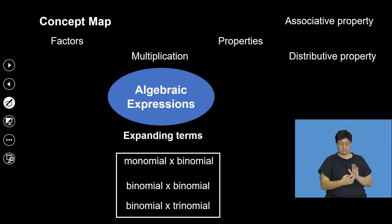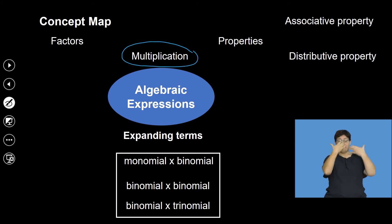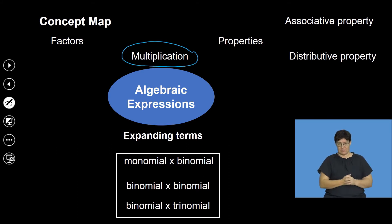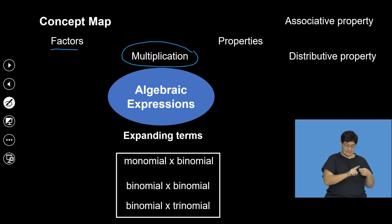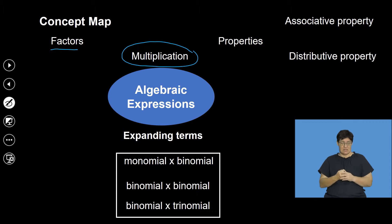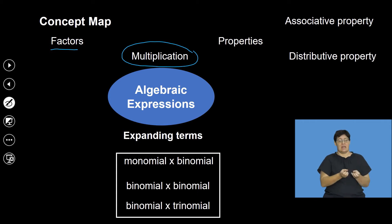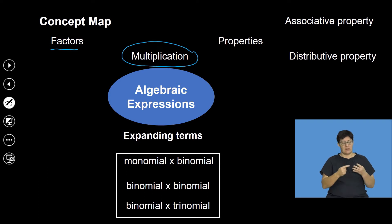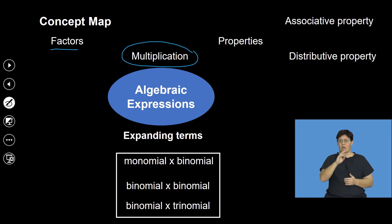The main operation we're going to be dealing with is multiplication. We're going to have what you call factors under multiplication, and the two properties of multiplication: the associative and the distributive. Then we'll look at the three types of expanding terms that have to do with a monomial, a binomial, and a trinomial.